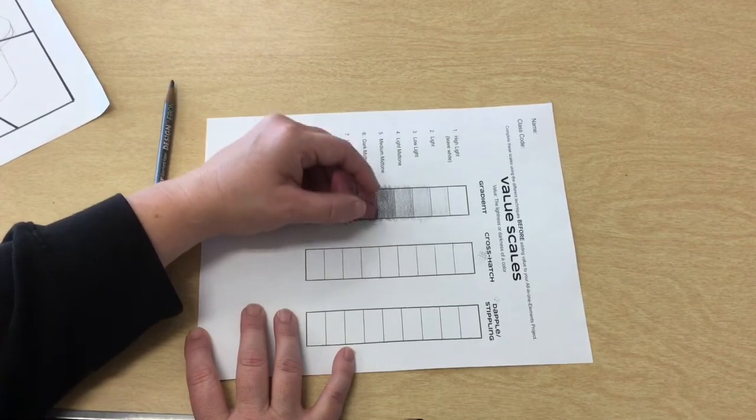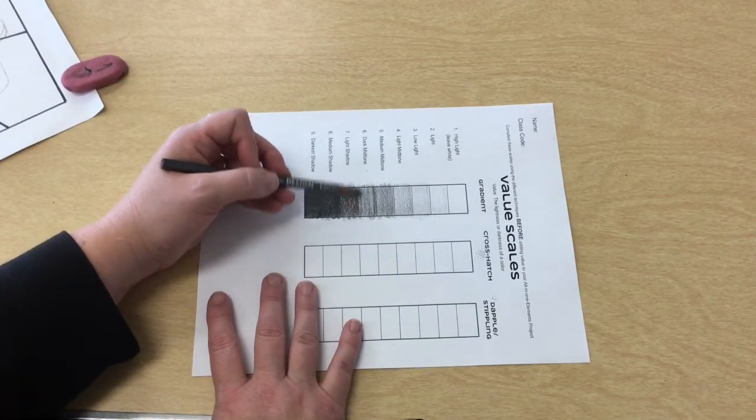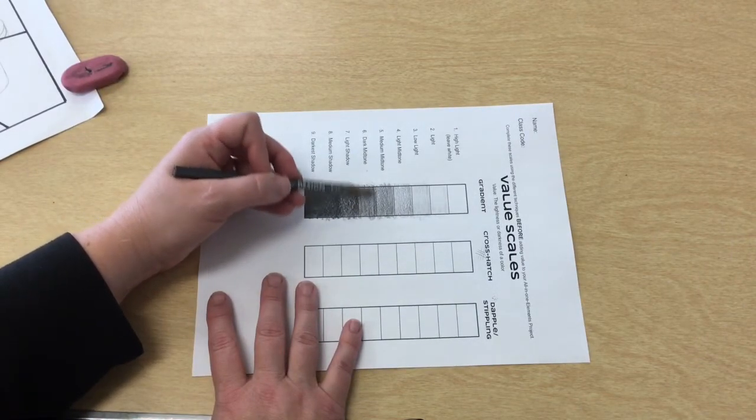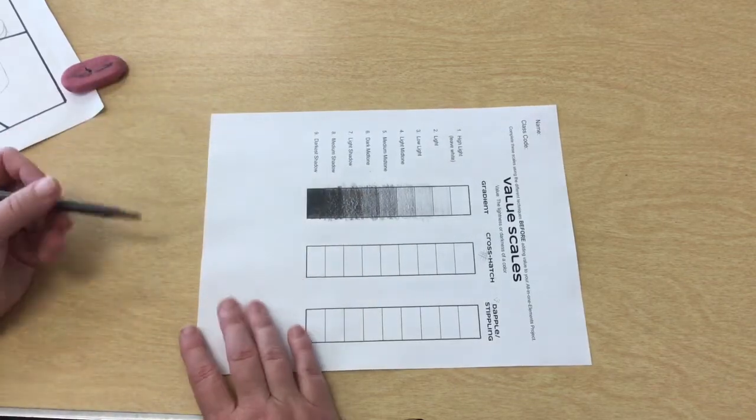I might need to do that here as well. Whoops that's too much. I see how that's way too light now. But I can go back in and add some more on top. So I'm just going to work until I can see the difference in the different values.